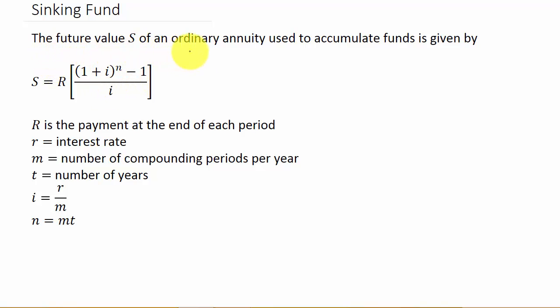So the future value S of an ordinary annuity used to accumulate funds is given by this: S equals R times 1 plus I to the N minus 1 over I, where the big R is the payment at the end of each period. Little r is your interest rate. M is the number of compounding periods per year, which means if it's compounded annually M would be 1, semiannually M would be 2, quarterly M would be 4, monthly M would be 12, and daily M would be 365.